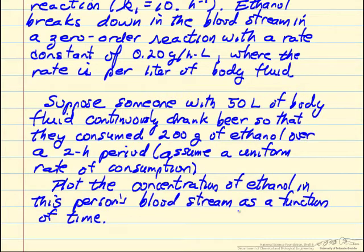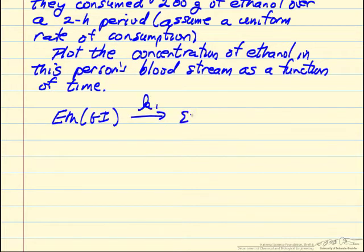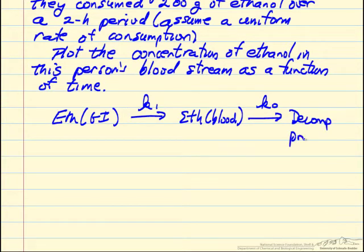We're going to look at this as a model. Essentially we have ethanol that's in the GI tract. This is a first order reaction where ethanol goes into the bloodstream, and then this zero order reaction where we go to decomposition products. We're going to write mass balances on ethanol. First we'll write it for the GI tract.